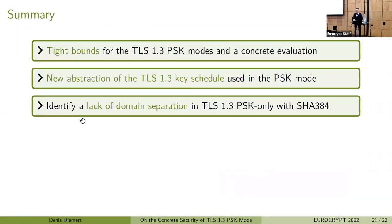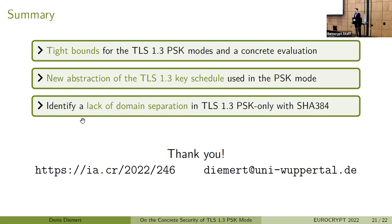To summarize: we give tight bounds for TLS 1.3 PSK and show that the parameters in practice are actually justified. We give a new abstraction of the TLS 1.3 key schedule for the pre-shared key modes that allows for a less complex and more modular proof in the random oracle model. And we identified a lack of domain separation in the TLS 1.3 PSK-only handshake with SHA-384. Thank you very much for listening, and I'm happy to take any questions.